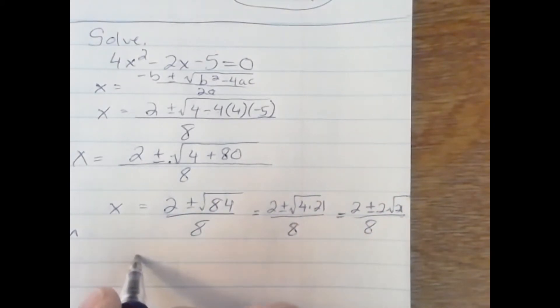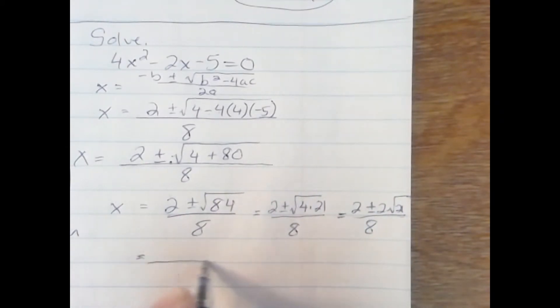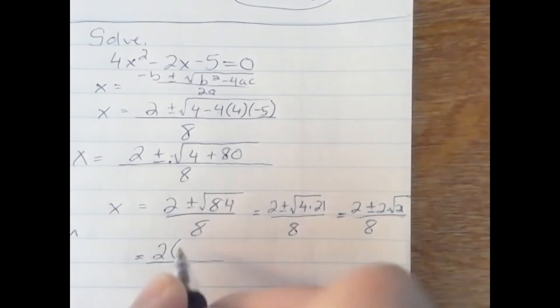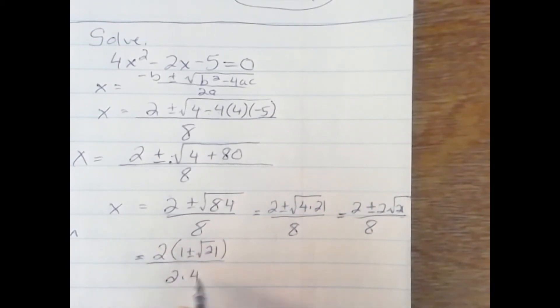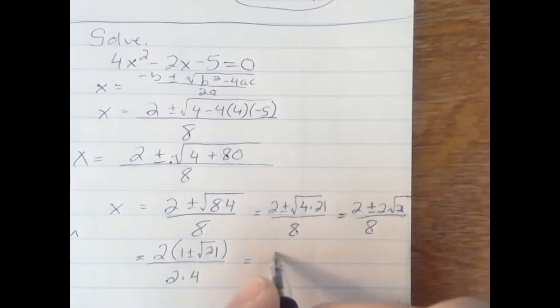Go back over here. I'm going to factor out a 2 from the top and the bottom. The top will have 1 plus radical 21. On the bottom I'll have 2 times 4. The 2's cancel out, leaving me with 1 plus or minus square root of 21 all over 4.